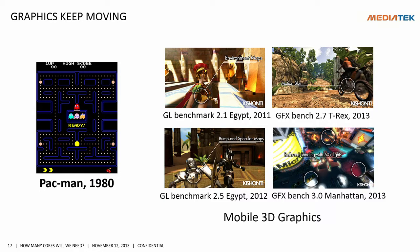In the graphics area, we keep moving on. In mobile graphics — one of the probably fastest-growing industries — you can see environmental maps used in 2011, bump and specular maps in 2012, then motion blur in 2013. From now on, we're going to see 60 lights with different shading and a lot more interesting things happening in graphics. Graphics keep moving.